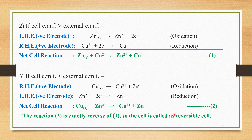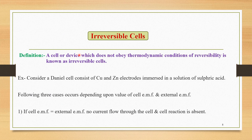This is the first type of cell — reversible cell. Now we look at irreversible cells. A cell or device which does not obey thermodynamic conditions of reversibility is known as an irreversible cell. Those cells or devices which do not obey the thermodynamic conditions of reversibility are called irreversible cells.